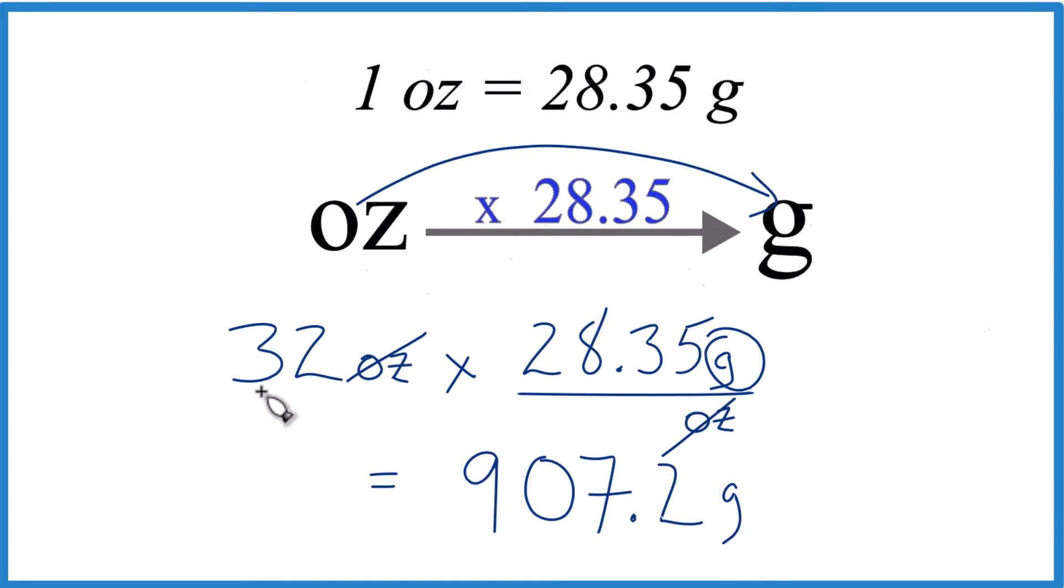So that's how you convert 32 ounces to grams. If you wanted to go from grams to ounces, you could just divide by 28.35.